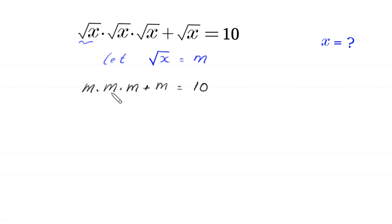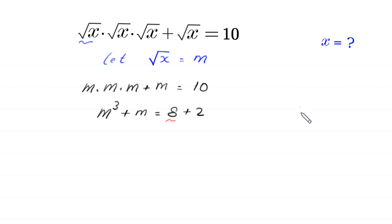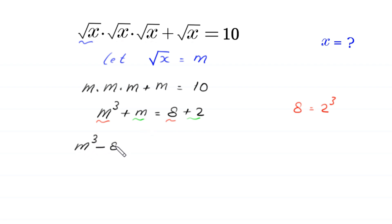Now, m times m times m will become m cubed, so m cubed plus m is equal to 10. This 10 can be written as 8 plus 2. Because 8 is a cube of 2, we write m cubed minus 8 plus m minus 2 is equal to 0.